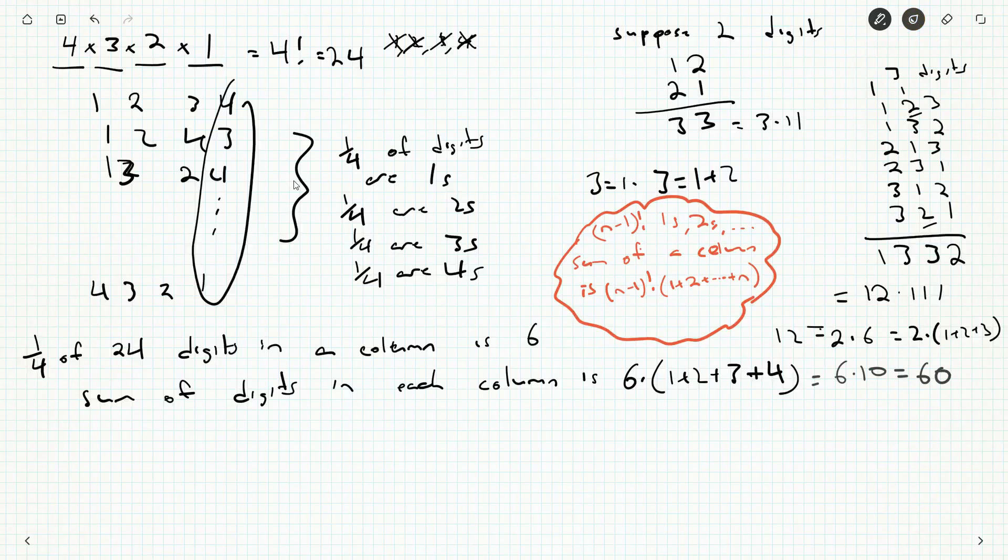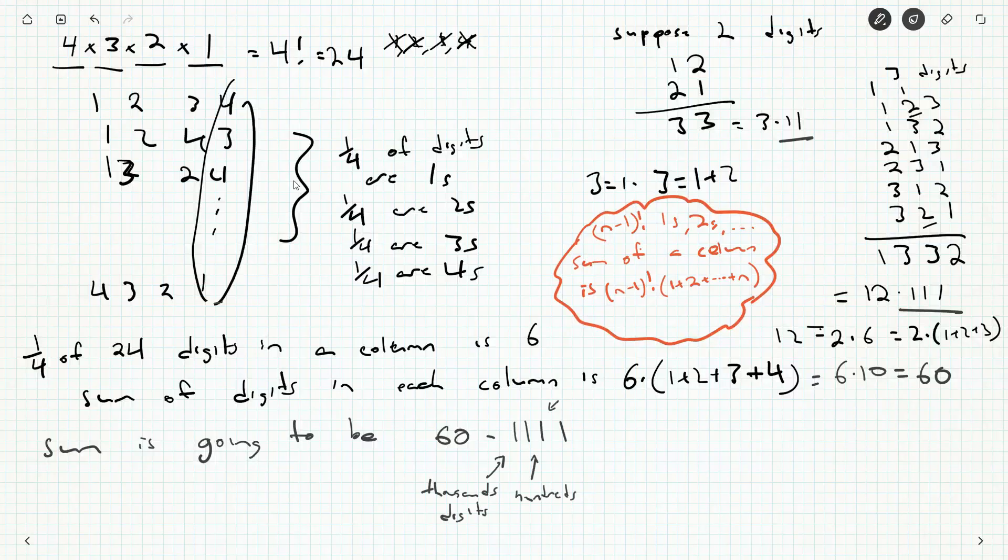But then there's all this fun carrying nonsense. And I suppose we could put the 0 down here, carry the 6. But we don't actually have to do that. Because there's another thing going on here. 1, 1, 1, 1. We're going to get 60 units, and then 60 in the tens, 60 in the hundreds, 60 in the thousands.